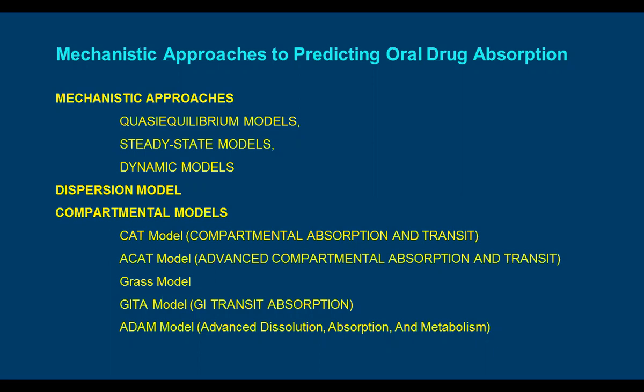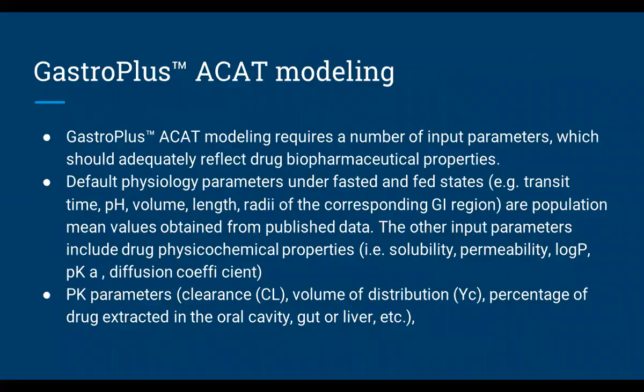The mechanistic approach to predicting oral absorption includes quasi-equilibrium models, steady-state models, dynamic models, and dispersion models. Comparing compartment models: the CAT model (Compartment Absorption and Transit), the Advanced CAT model, the GRASS model, the Graduated Transit model, the GITA model, and the ADAM model (Advanced Dissolution Absorption Metabolism). GastroPlus uses the ACAT model, which records a number of input parameters that should adequately reflect biopharmaceutical properties.